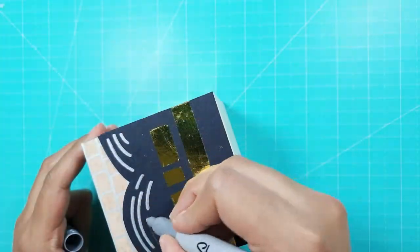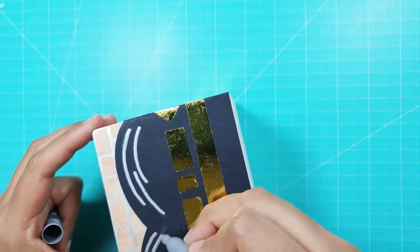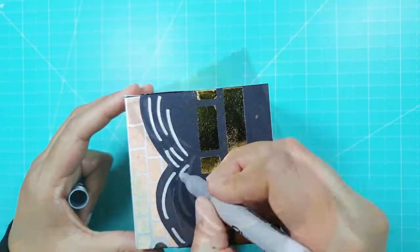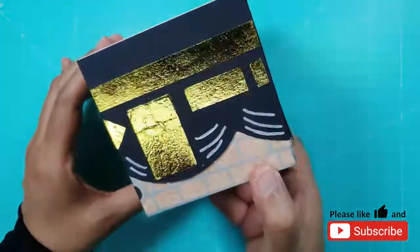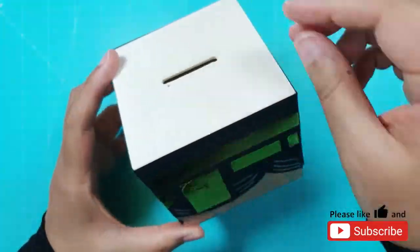Finally I used a silver sharpie pen to draw over the pencil lines for the folds. And here we have our completed Ka'bah sadaqah box which we can use to collect money to give to charity.